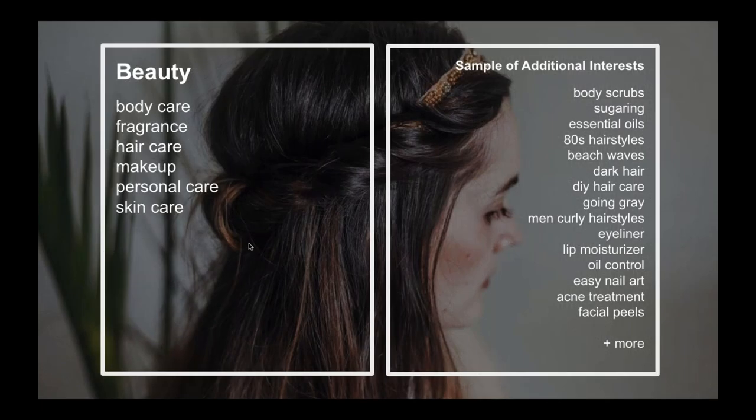Here's a sampling of interests in one category — beauty. As you can see, there's an opportunity to target everyone interested in beauty, just those interested in hair and makeup or skincare, or those who have even more specific interests like sugaring, dark hair, or solutions for going gray. There's so much you can do in beauty given all the activity we see in this area on Pinterest — it's a wealth of targeting options for marketers.